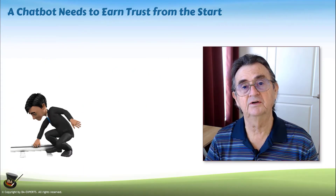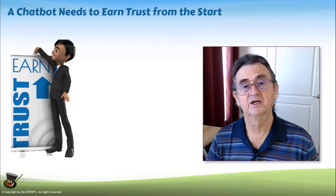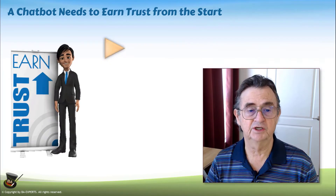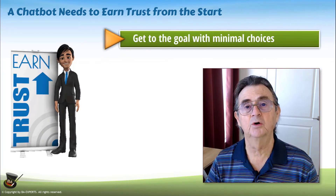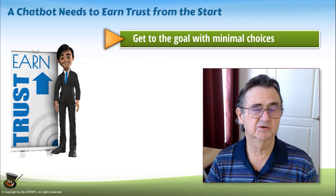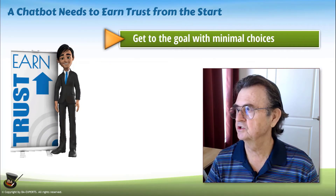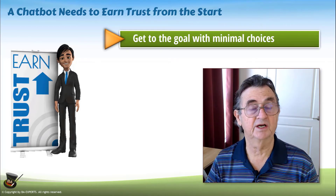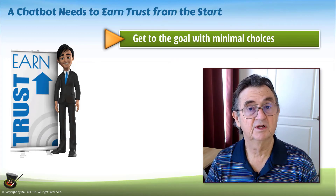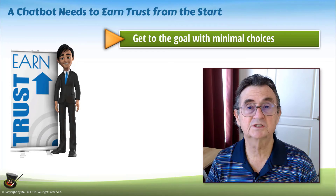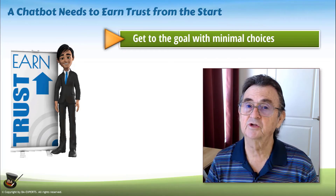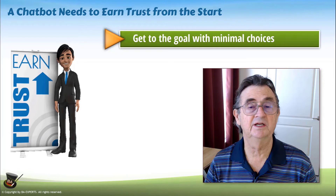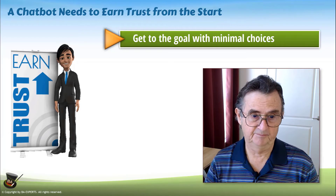The first rule of developing the flow of the conversation is: get me to the goal with minimal choices. Meaning, don't ask me questions that are not pertinent to what it is I'm trying to achieve. I want to have the bare minimum number of questions necessary so that you are confident you're recommending the correct solution for me.